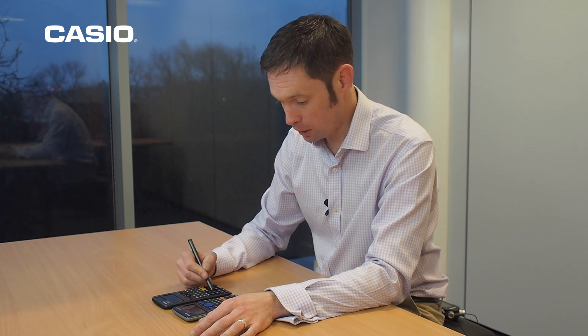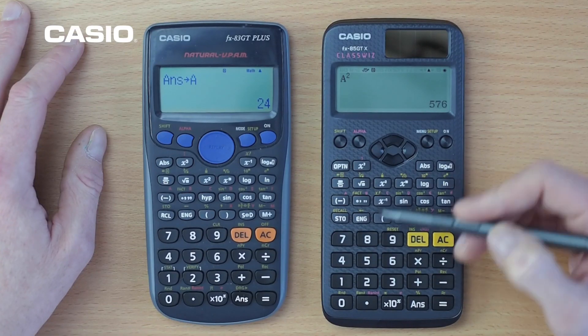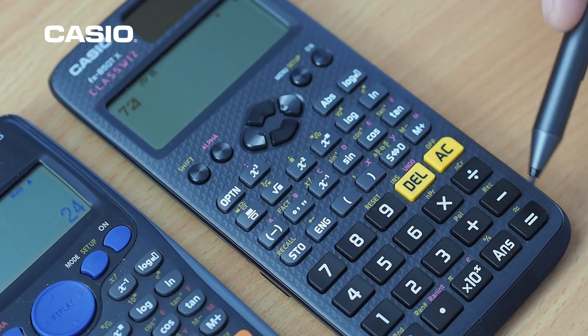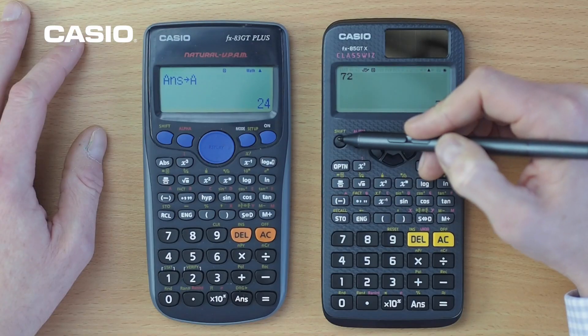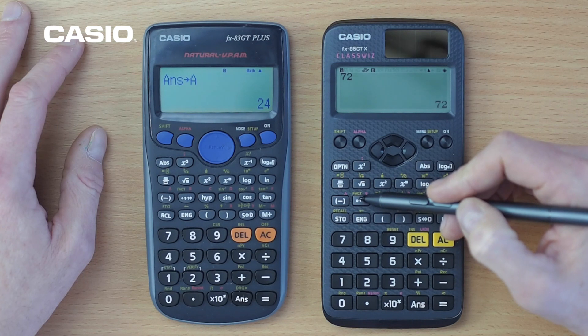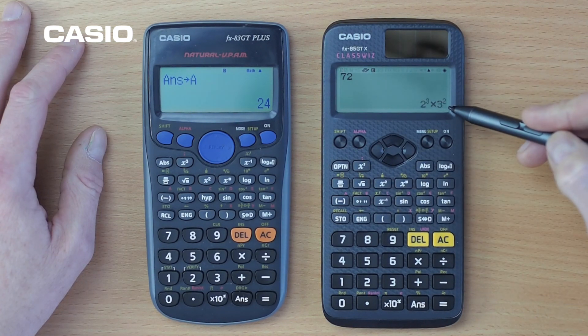Other functions that you might not previously have been aware of. So if we want to have a look at some factors of a number, let's have a look at the factors of 72. We go shift and factors. And there we go, straight away on the display, we've got two cubed times by three squared.